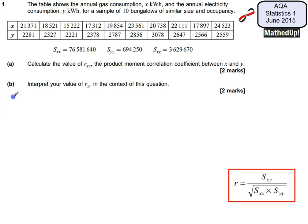So for part A, we're going to say, well, rxy is going to be equal to sxy, which is 3629670, divided by the square root of sxx, which is 76581640, times by syy, which is 694250.